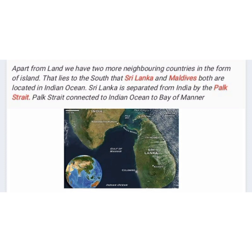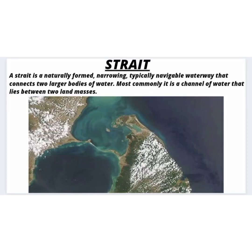Apart from land, we have two more neighboring countries in the form of islands lying to the south — Sri Lanka and Maldives — both located in the Indian Ocean. Sri Lanka is separated from India by the Palk Strait. The Palk Strait is connected to the Indian Ocean by the Bay of Mannar. A strait is a naturally formed, typically navigable waterway that connects two large water bodies, commonly a channel lying between two land masses.